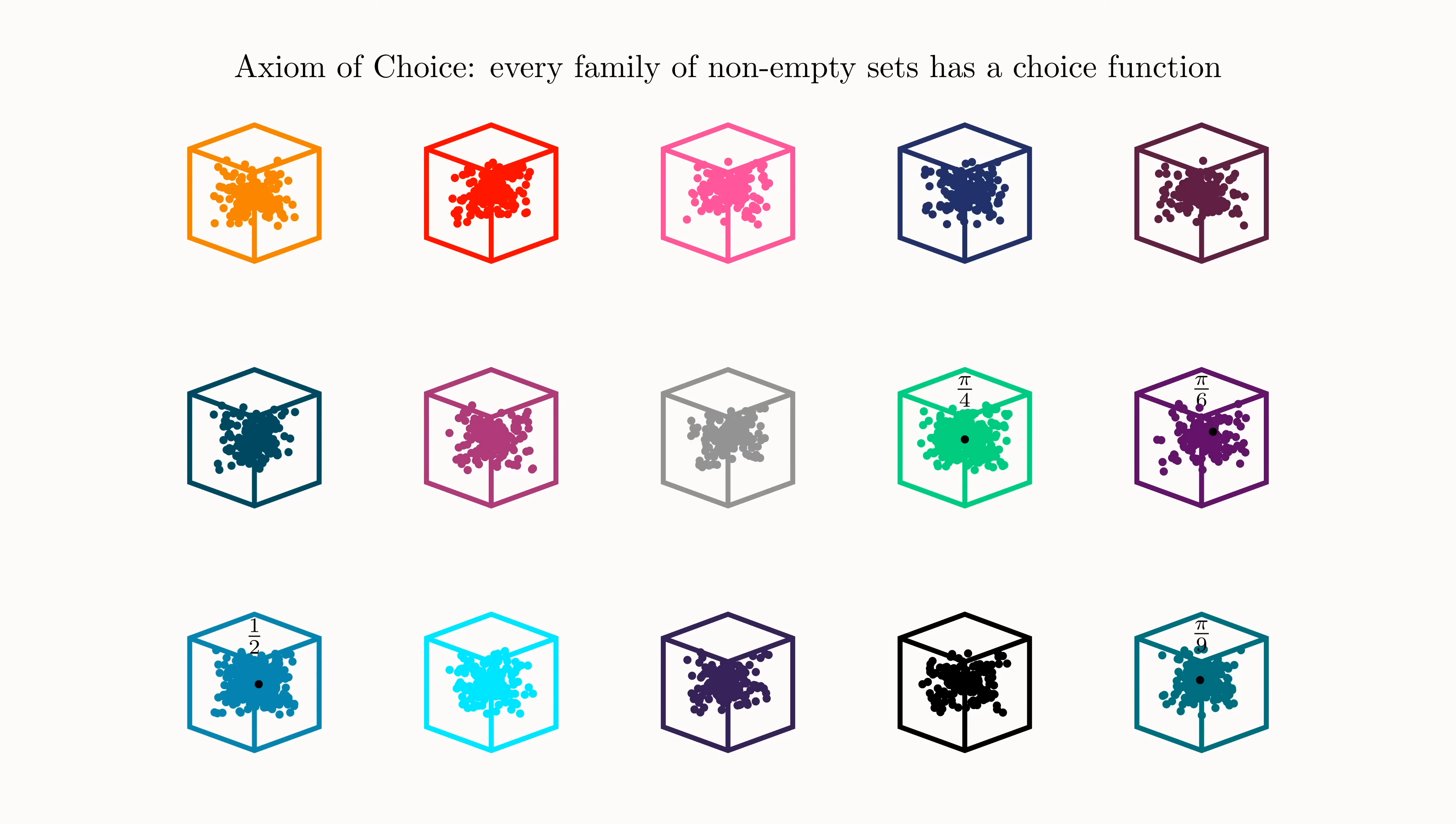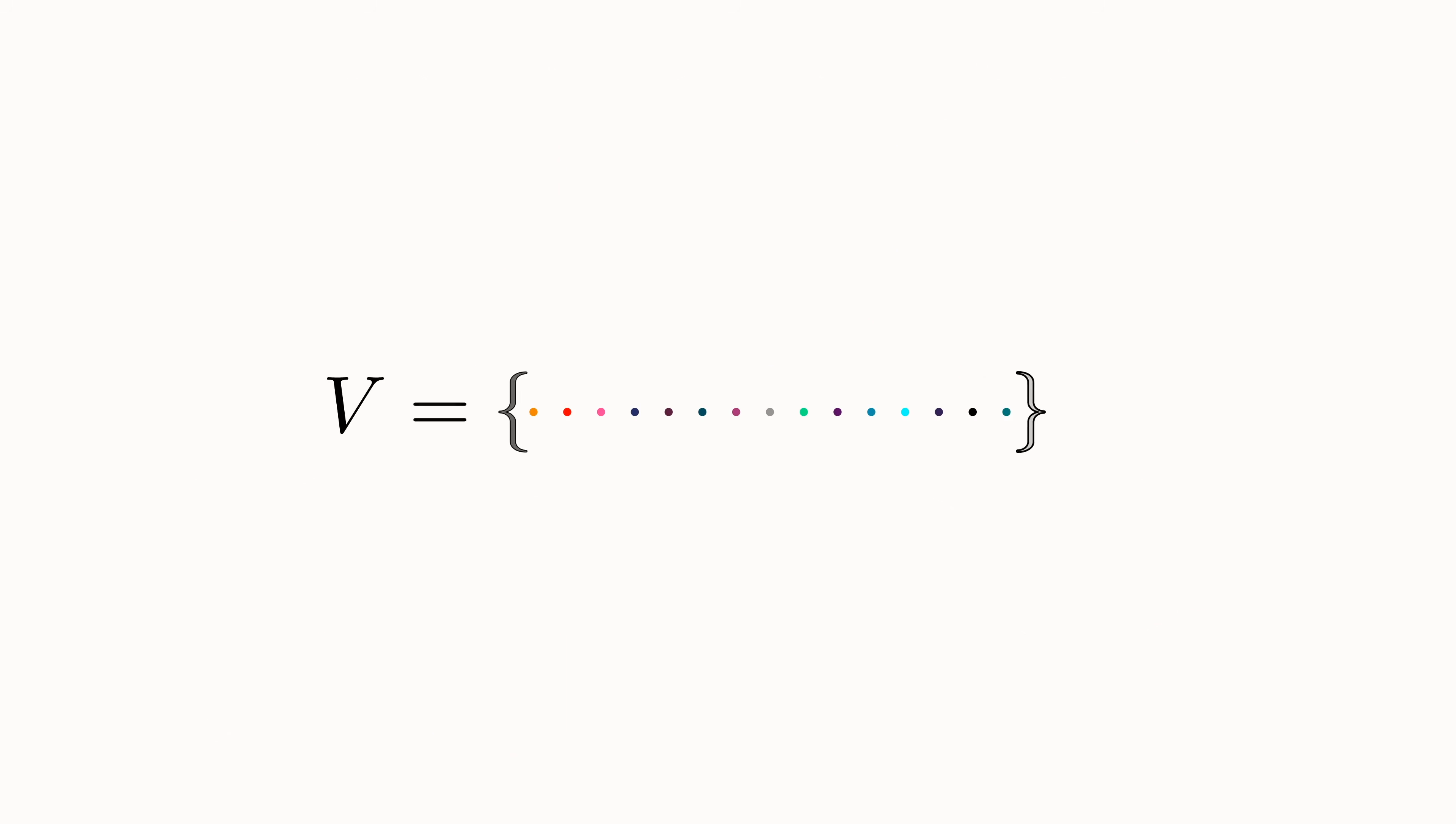Now although we can do this explicitly for some boxes, in general we don't know what is in each box. Nevertheless, the axiom of choice still guarantees that even if we can't explicitly state which number we're picking, we can always pick one representative out of each box. We then form a new set V that consists of each and every single one of these representatives. And here it is.